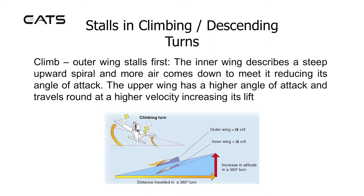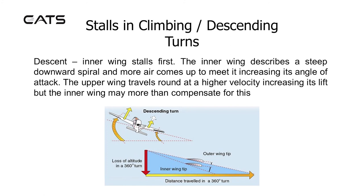Stalls in climbing and descending turns. In the climb the outer wing stalls first — the inner wing describes a steep upward spiral and more air comes down to meet it, reducing its angle of attack, while the upper wing travels round at a higher velocity, increasing its lift. In the descent the inner wing stalls first — the inner wing describes a steep downward spiral and more air comes up to meet it, increasing its angle of attack, while the upper wing travels at higher velocity increasing its lift, but the inner wing may more than compensate for this.